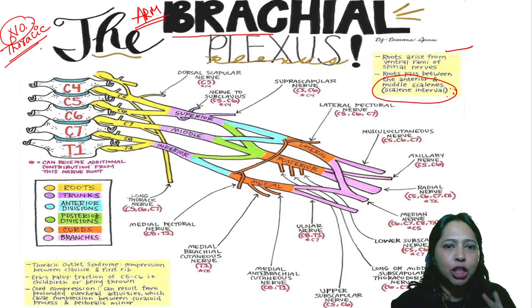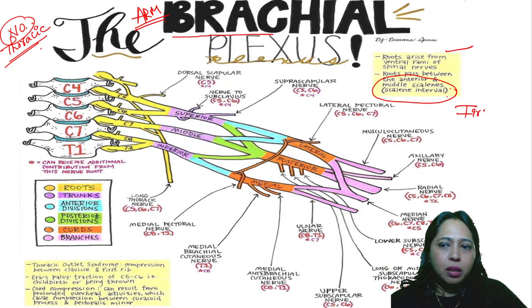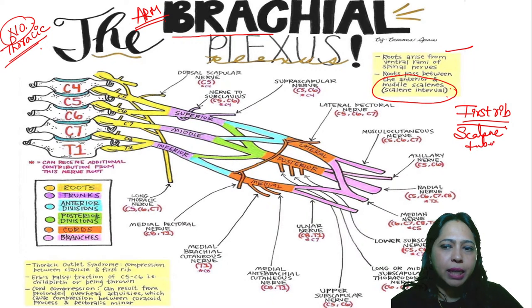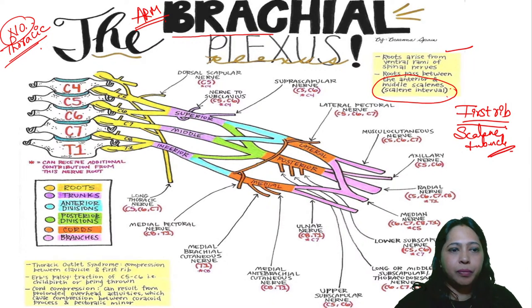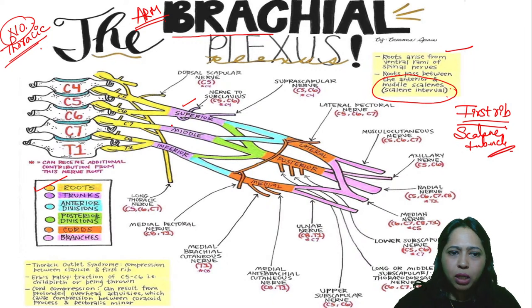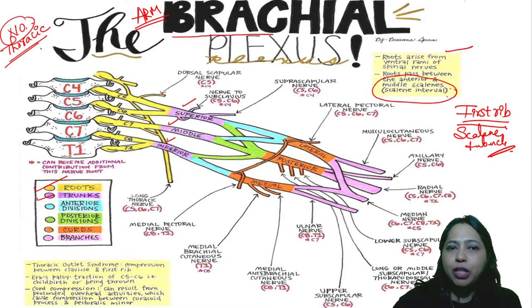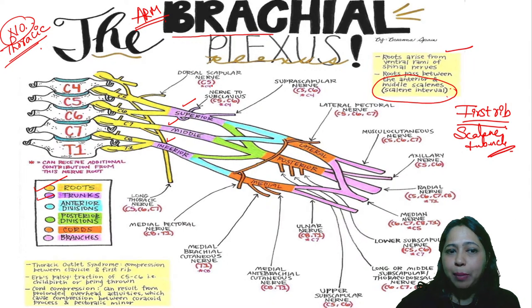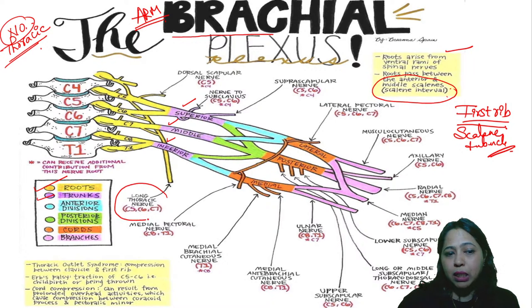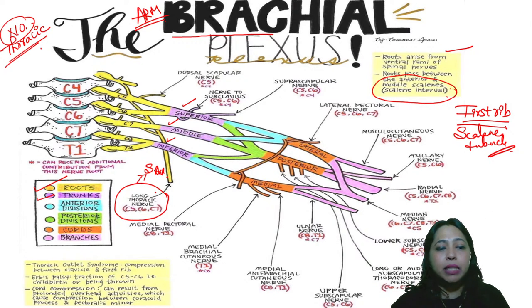The scalene muscles are attached to the scalene tubercle on the first rib. You can see the roots forming the trunks — the yellow ones are the roots forming the superior trunk, middle trunk, and inferior trunk, giving three trunks in total. From the roots you also have the dorsal scapular nerve and the long thoracic nerve (C5, C6, C7), which supplies the serratus anterior muscle. There is also a nerve to subclavius.